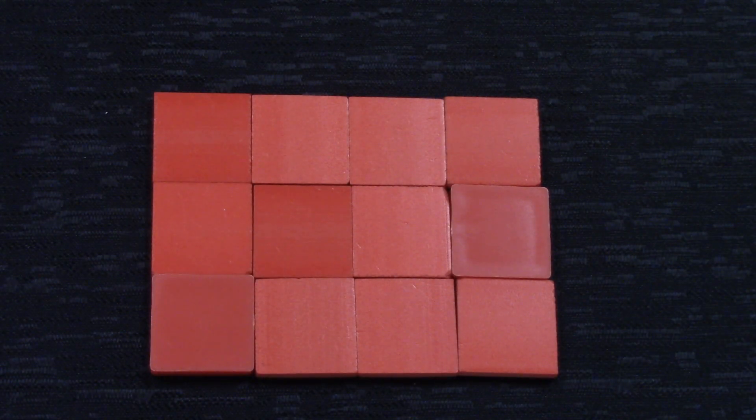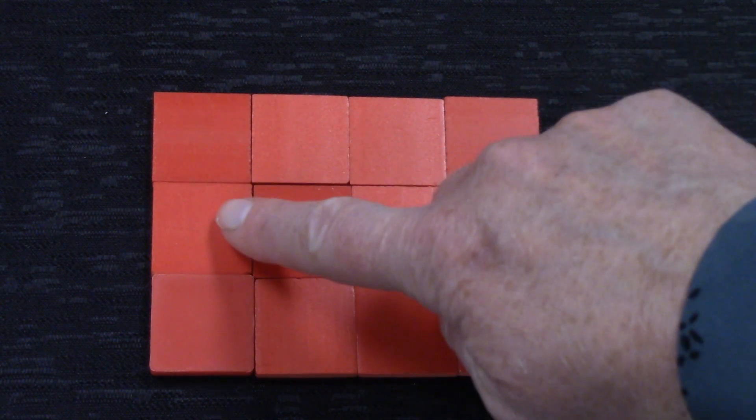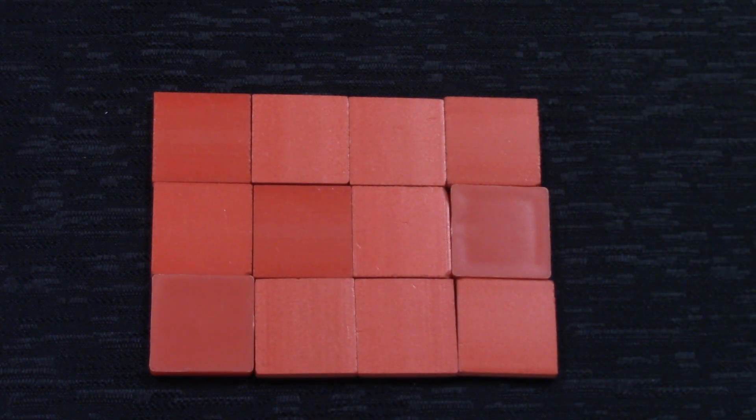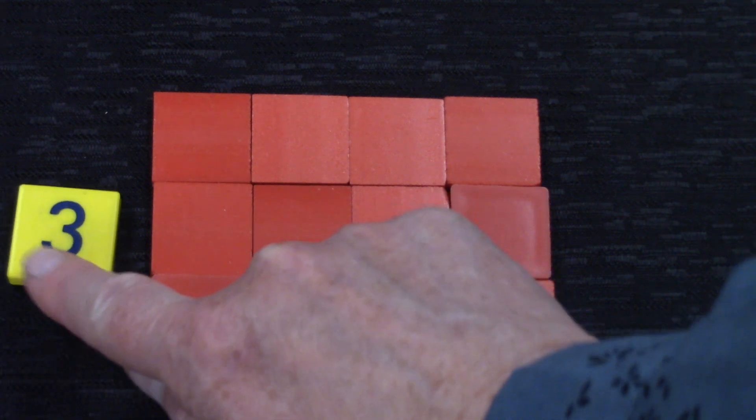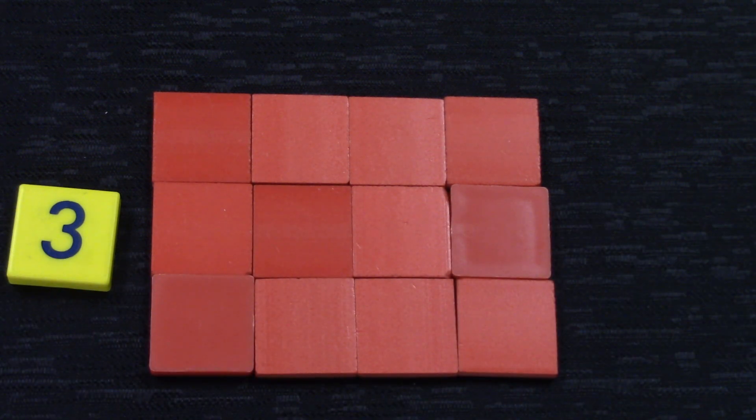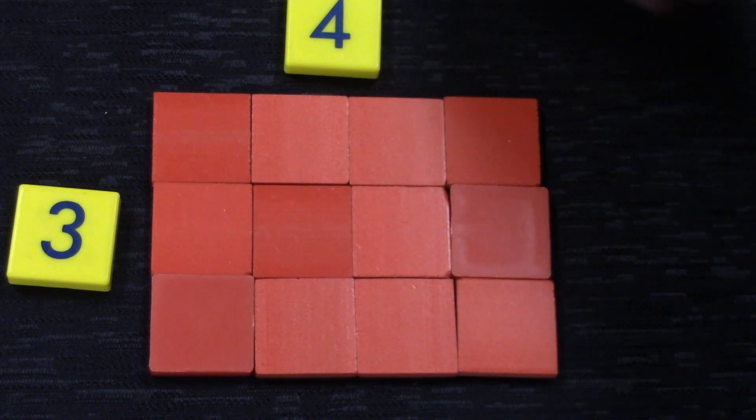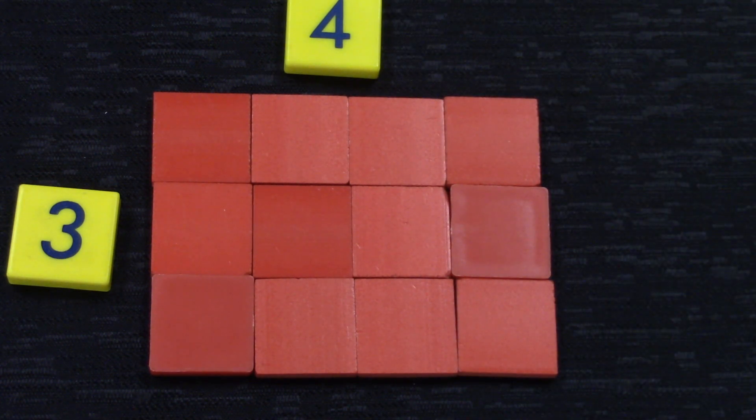How would we label this array? Well, we would see how many rows we have and there are three rows. And then we would see how many are in each row and there are four in each row. We would say that this is a three by four array.